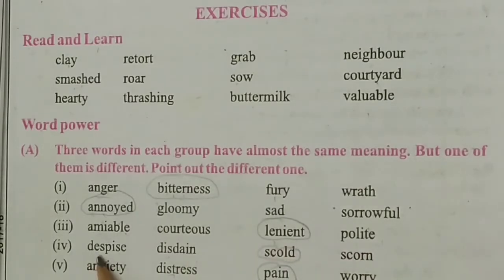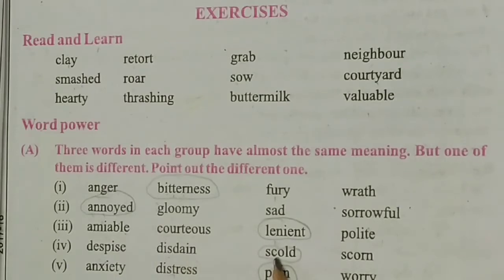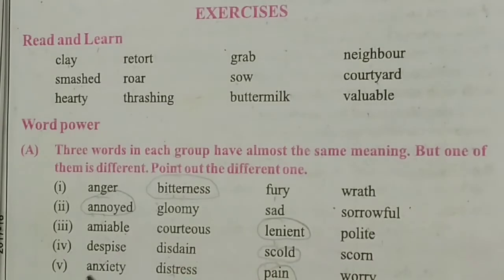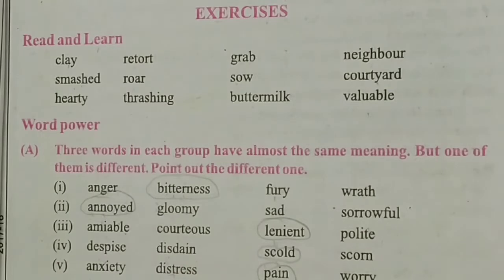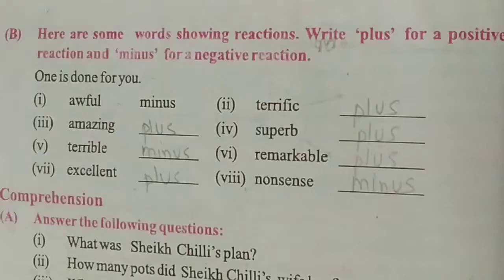Fourth group: despise, disdain, scold, scorn — 'scold' is the different word. Fifth: anxiety, distress, pain, worry — 'pain' is the different word. These types of questions you will complete with the help of your dictionary.